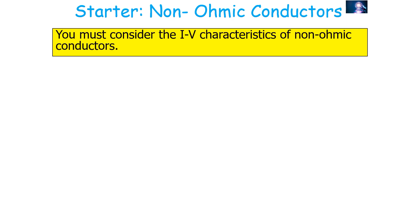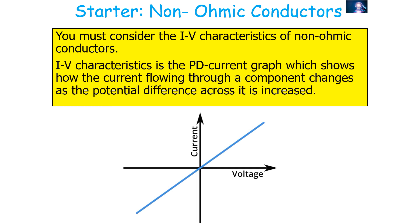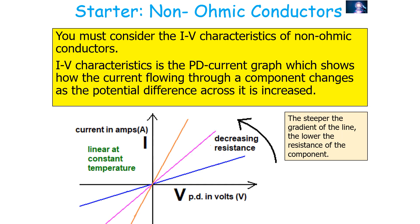You must consider the IV characteristics of non-ohmic conductors. In designing an electrical circuit, we need to know how components will react when the PD across them changes, to ensure the circuit performs its intended function under all circumstances. The IV characteristics graph shows how current flowing through a component changes as the potential difference across it is increased. The gradient of the line is 1 over resistance, so the shallower the line the greater the resistance, and the steeper the line the lower the resistance.